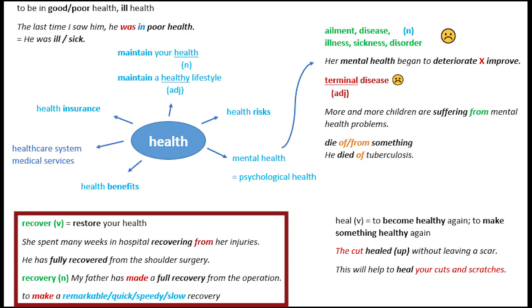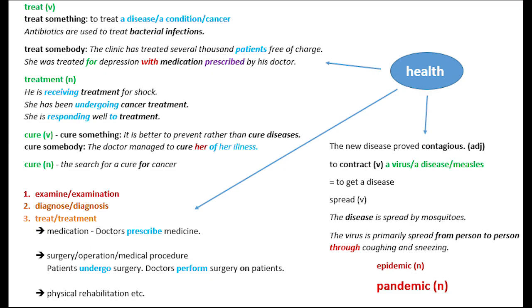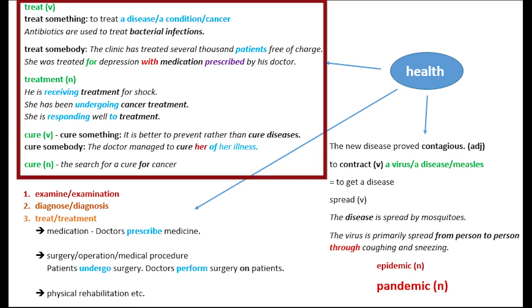Recovery has many collocations: to make a remarkable, quick, speedy, or slow recovery. On my second page I start with the verb treat. You can treat a disease, treat a condition, or treat cancer. 'Antibiotics are used to treat bacterial infections.' You can also treat somebody: 'The clinic has treated several thousand patients free of charge.' Patient is another health-related word — the contextual opposite of doctor.